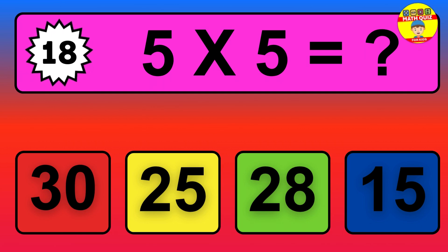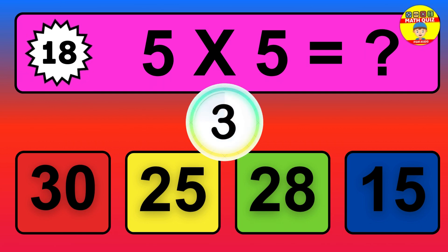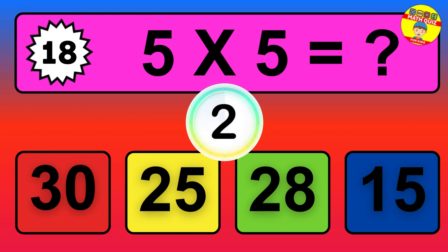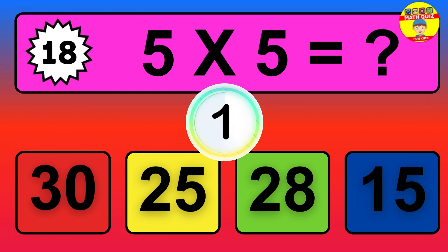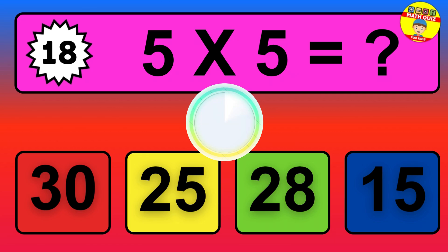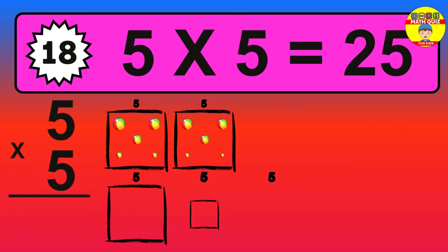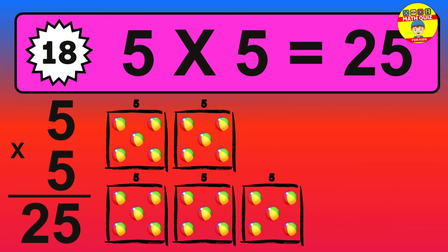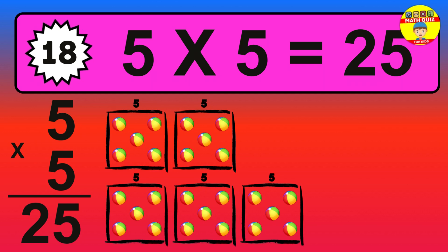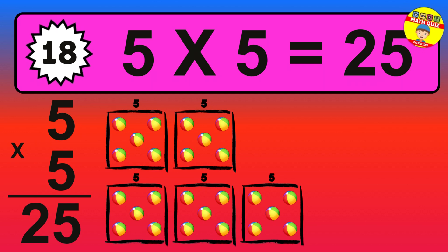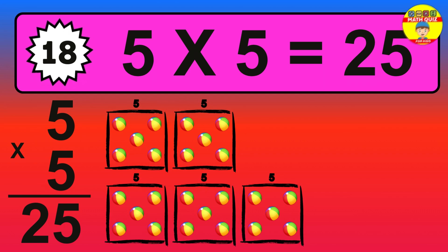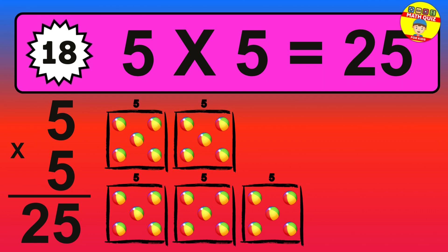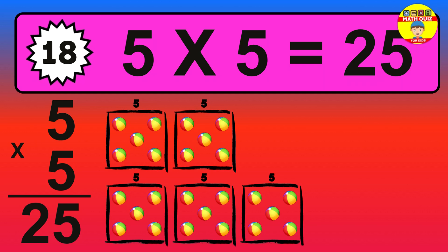Question eighteen: five times five equals what? The answer is five times five is twenty-five. To calculate, we have five groups with five balls each one. So how many balls do we have? Twenty-five balls.